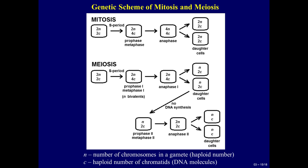In this picture we can find a genetic scheme of mitosis and meiosis. The small letter N indicates the number of chromosomes in a gamete — the haploid number. The letter C is used for the haploid number of chromatids or DNA molecules. During mitosis, after a period of interphase, the cell has a diploid number of chromosomes and a tetraploid number of chromatids. During anaphase, a cell has a tetraploid number of chromosomes and tetraploid number of chromatids, because each chromosome has one chromatid only. After cytokinesis, two daughter cells will be diploid, with a diploid number of chromosomes and diploid number of chromatids.